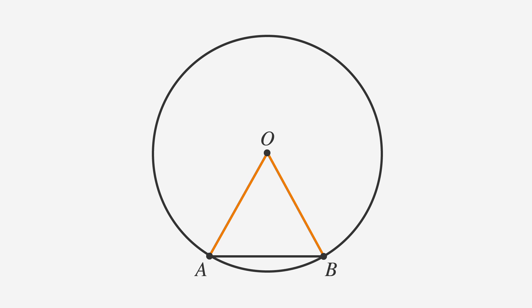Since AO and BO are equal, triangle AOB is isosceles. It's also good to note that since AO and BO are equal, the angles opposite them must also be equal.